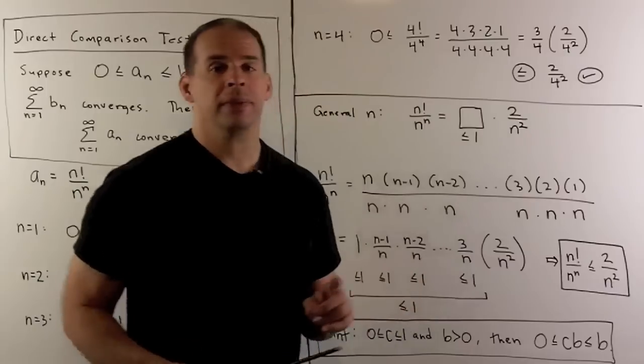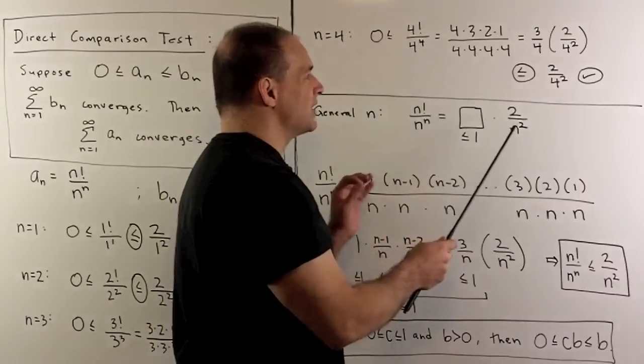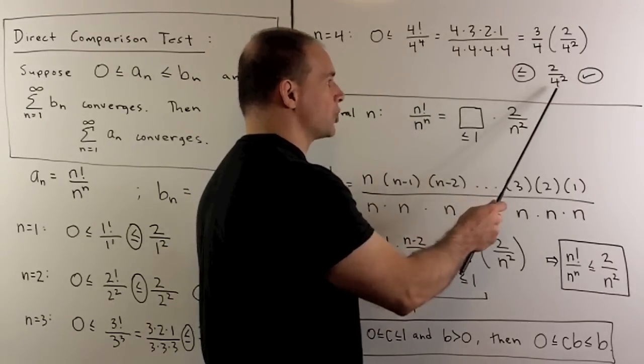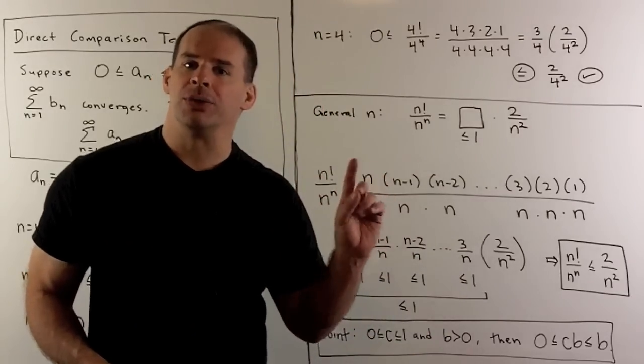Since 3 fourths is less than 1, we're going to have that this term is less than or equal to 2 over 4 squared. So here we're just using, if I take a fraction of the whole, that's less than or equal to the whole.